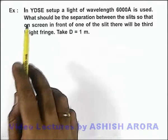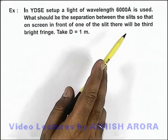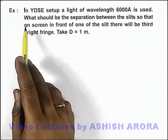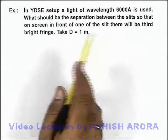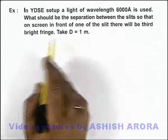In this example, we are given that in YDSE setup a light of wavelength 6000 Angstrom is used, and it is asking what should be the separation between the slits so that on screen in front of one of the slits there will be third bright fringe.